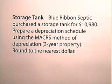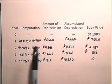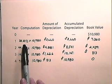Now let's prepare a depreciation schedule. Blue Ribbon Septic purchased a storage tank for $10,980. Prepare a depreciation schedule using the modified accelerated cost recovery system method of depreciation. This is three-year property, and we will round to the nearest dollar. We begin with a book value of $10,980. Each year we find our depreciation amount by finding these values in our depreciation rate schedule.